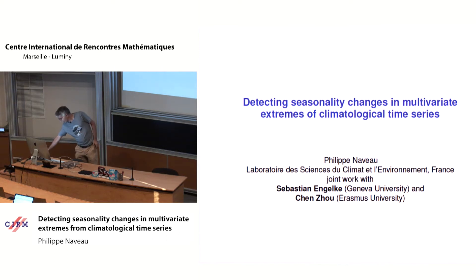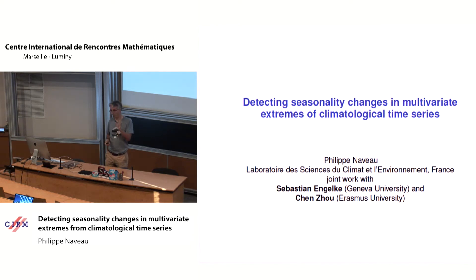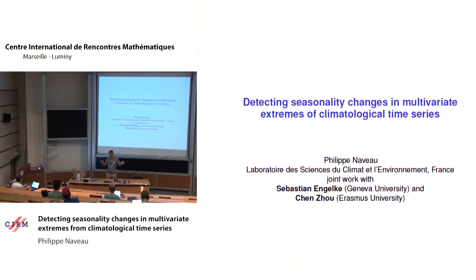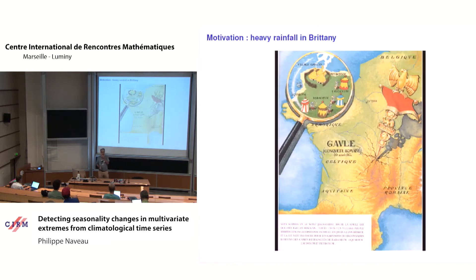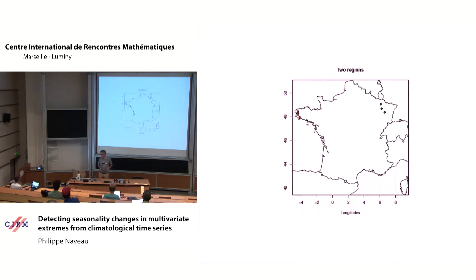The main idea is to look at extreme values and try to detect when, if you give me a season, the other season is different in terms of extreme dependence structure. I'm going to be clearer in the next slide. Here is a map that everyone knows — at least all French or French-speaking people. I'm going to focus on one region: basically the region of Brittany. My main question is to see if the winter extremes have a different dependence structure than, let's say, summer extremes.